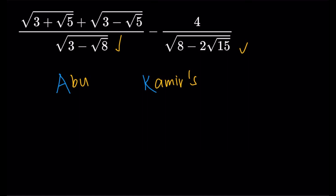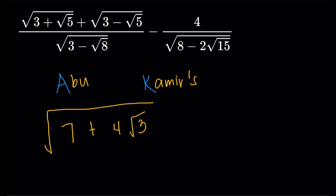Let's talk about what Abu Kamir states. Abu Kamir's method of extracting square roots — let's use an example. Let's say we have 7 plus 4 square root of 3. I want to take the square root of this thing: the square root of 7 plus 4 square root of 3. The first step is to write it in terms of a plus 2 square root of b — something plus 2 square root of something. The inside is not yet in that format.